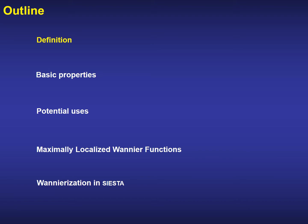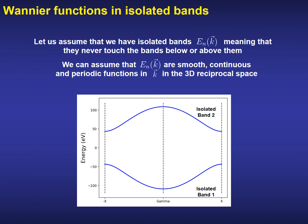So let's start with the definition. To simplify the discussion, we can start with a simple case, although all the concepts that will be introduced from now on can be generalized to more complex band manifolds. Imagine that we have a set of isolated bands defined on the whole Brillouin zone, labeled by the discrete band index n. By isolated, we mean that they never touch the bands below or above them — they do not cross at any point of the Brillouin zone.